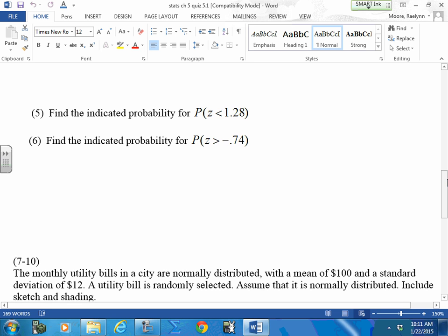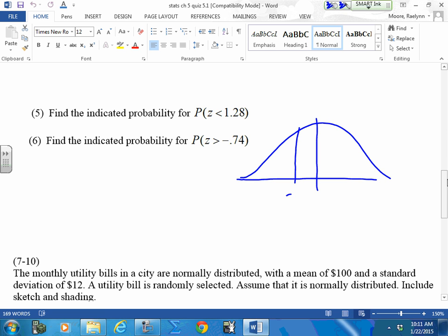Can we just look at number 6 for a minute? I know a couple were off on number 6. Here is your negative 1, here is your negative 7.4. Doesn't this have to be more than 50%? When you look up that negative, you're going to get less than 50%. Use your curve as a guide. If it's less, then subtract it from 1, or look up the positive 0.74 and you don't have to subtract it from 1.